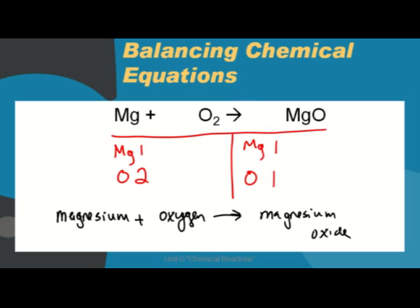To balance this equation, we're going to add coefficients. One thing I noticed is that I need to increase the number of oxygens in the products. The only way I can do that is to multiply it by two. So I added the coefficient two to magnesium oxide. That changes the oxygen to two, but it also changes my magnesium to two.